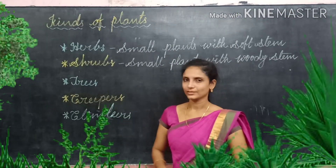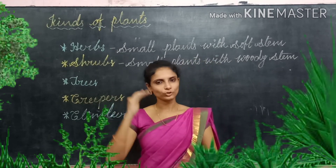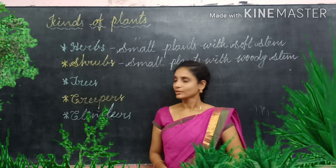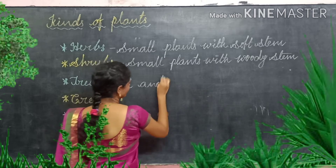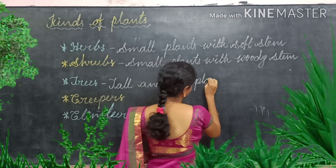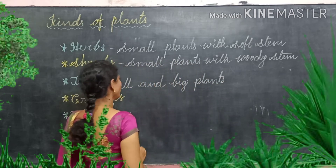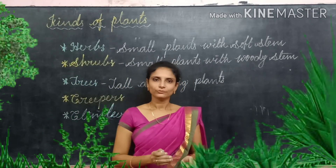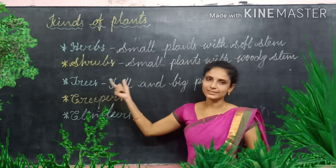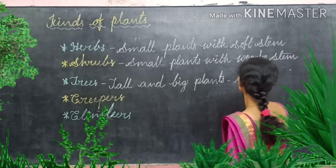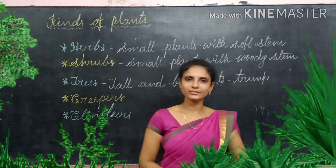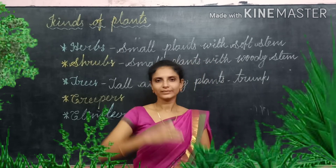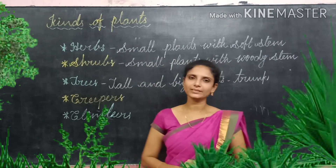The third type is trees. Tall and big plants are called trees. Trees have a very hard stem, and the stem of a tree is called a trunk. Trees have woody branches, stems, and leaves at some distance from the ground. Examples of trees are mango tree and banyan tree.